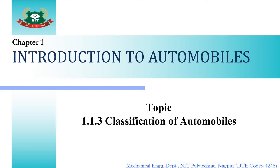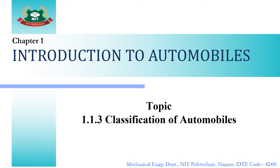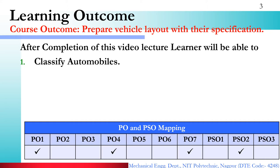In this video lecture, we are going to classify automobiles on a number of different bases. The learning outcome for this video lecture is course outcome: prepare vehicle layout with their specifications. In the last video lecture, we have already learned about the different components and the various systems of an automobile.